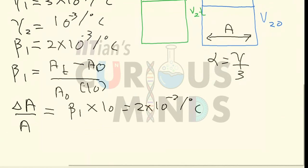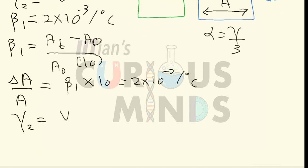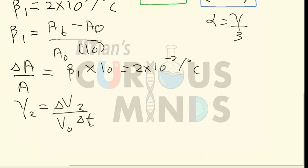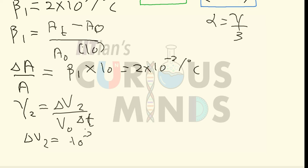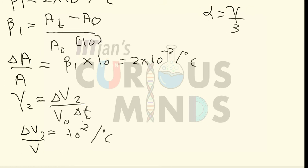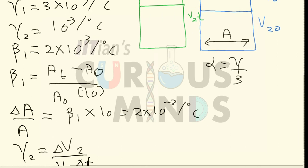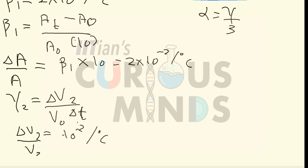Now finding the change in volume of the benzene. Using the formula γ₂ = ΔV₂/(V₀ × ΔT), so ΔV₂/V₀ = γ₂ × ΔT = 10⁻³ × 10 = 10⁻². The percentage change in volume of the benzene is 10⁻², while the area is changing by 2×10⁻².